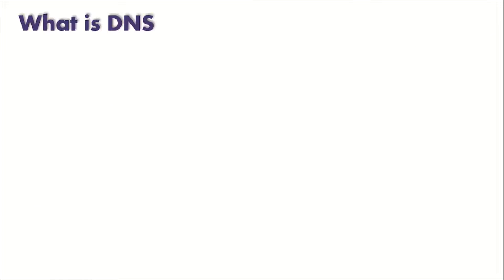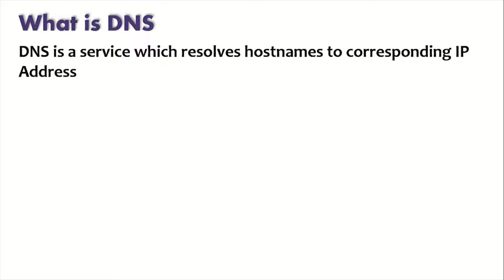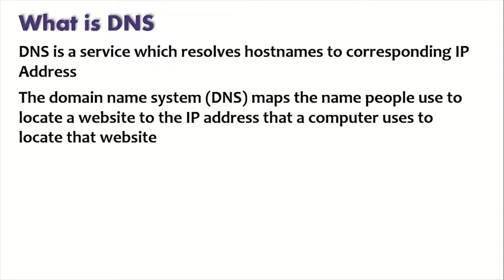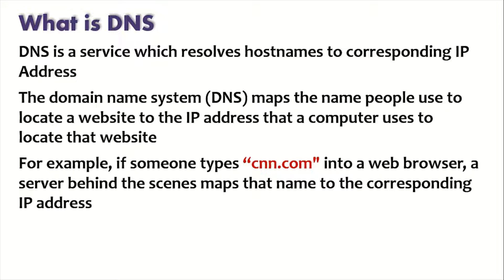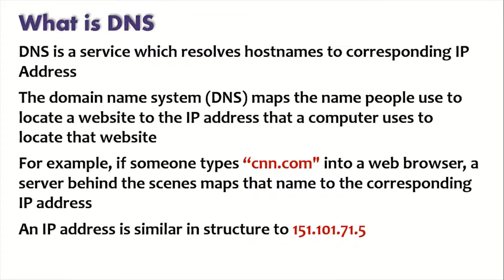So what exactly is DNS? DNS is a service which resolves a hostname to its corresponding IP address. The domain naming system maps the name people use to locate a website to the corresponding IP address of that website. For example, if someone types cnn.com into a browser, a server behind the scenes maps that name to a corresponding IP address — something like 151.101.71.5.